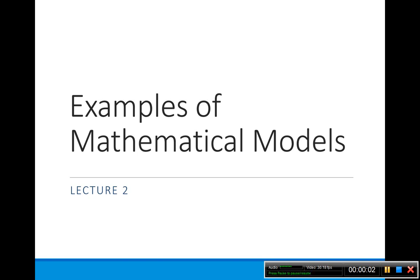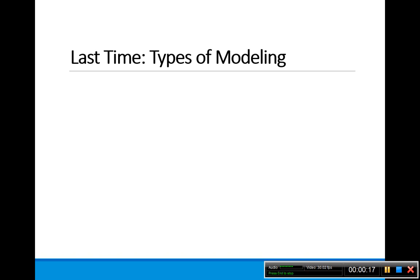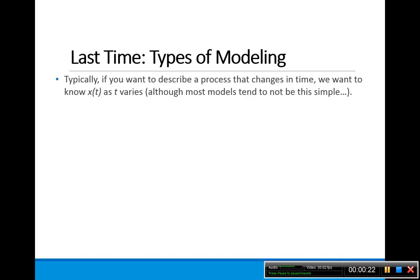In this lecture we're going to give some examples of mathematical models, just to give an overview of what types of models exist and how the models have been used in different applications in industry. I'm going to give you an overview of what we talked about last time — the types of models that there are. We talked about modeling as a way to describe some kind of complex process that changes in time. So we have a process x that changes as a function of time, t.